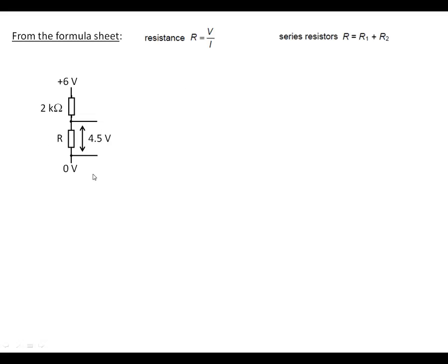Second example: we know one of the resistors, we know the voltage over the whole lot, and we know the voltage across the unknown resistor. We've got to work out what R is. Well, first of all, we know how many volts we've got here and how many volts we've got here, so we know how many volts we've got across the 2K resistor. Therefore we can work out the current flowing through the 2K resistor. So we've got six volts at the top of the resistor, 4.5 volts at the bottom, which gives us 1.5 volts across it, divided by the resistance, and we end up with 0.75 milliamps as the current.